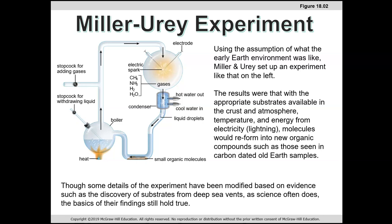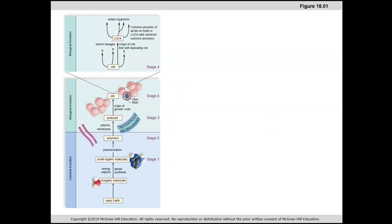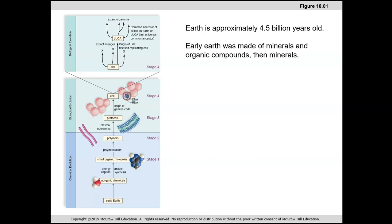We have very good data that tells us that the Earth is approximately four and a half billion years old. It might be 4.8 or 4.2—really, who's counting those 0.3 billion years? We know that the Earth is made up of minerals and organic compounds, then it was made up of minerals.